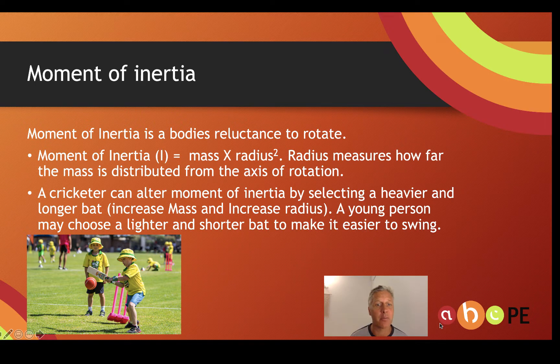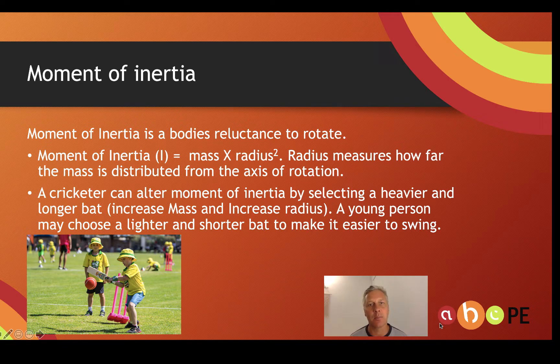A young person, however, may choose a lighter and shorter bat because they may struggle to swing a bat with a large moment of inertia at the same angular velocity. I've made a short video to help you understand that concept.